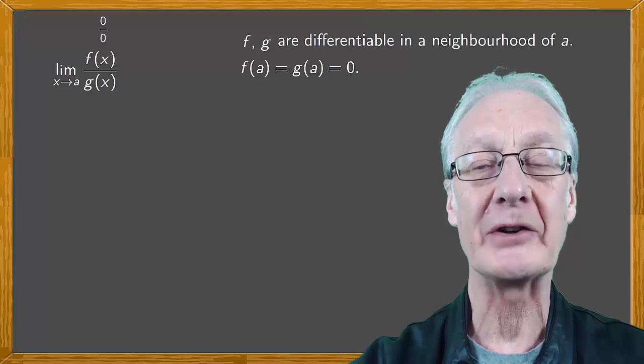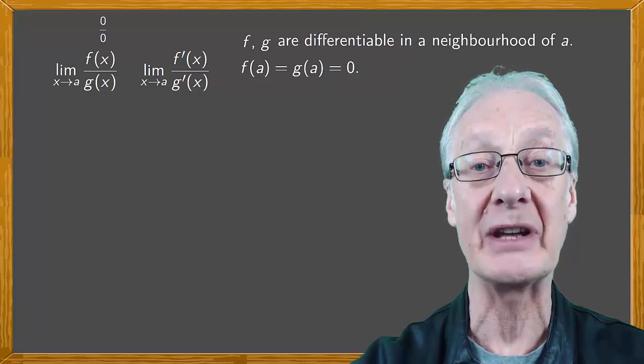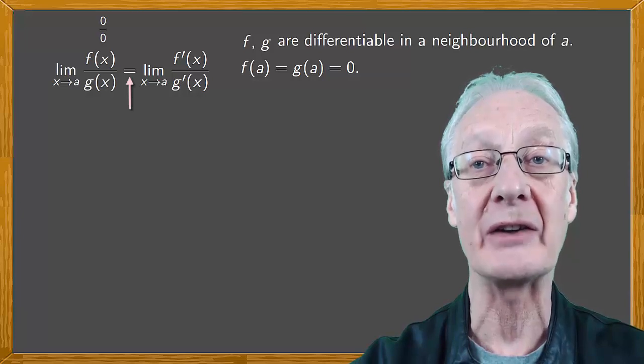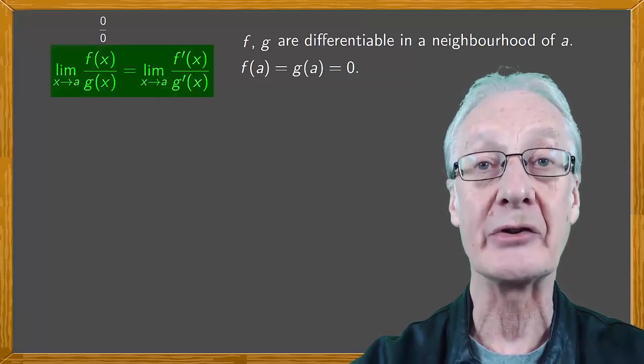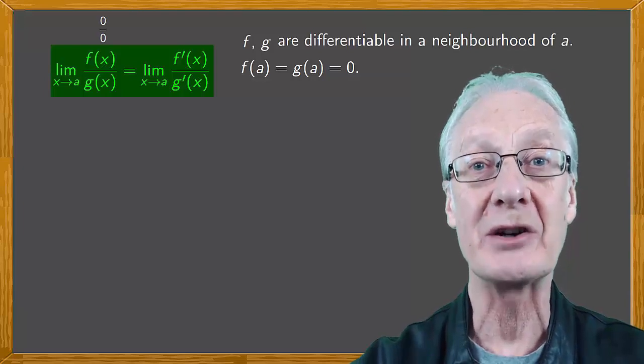L'Hopital's rule says that if the limit at a of the quotient of the derivatives of f and g exists, then this coincides with the limit of f over g as x tends to a. So this is what we want to demonstrate, that these two limits coincide.